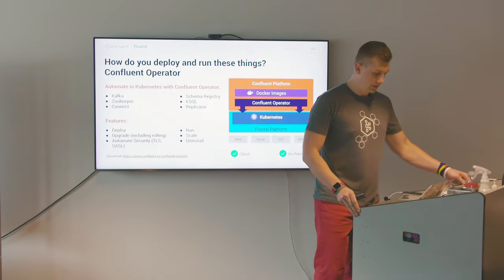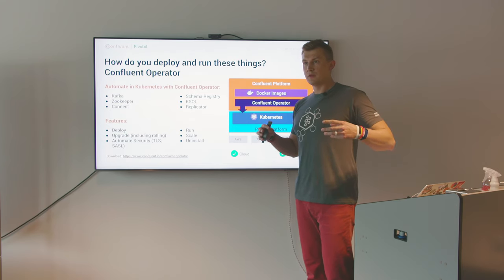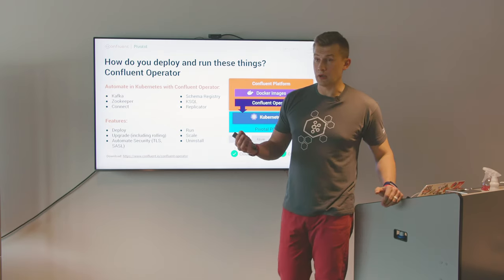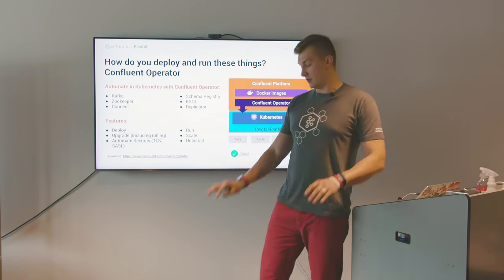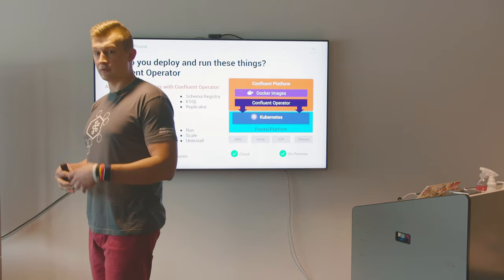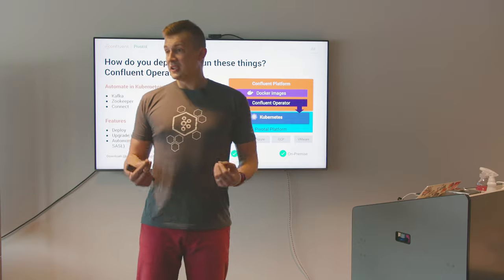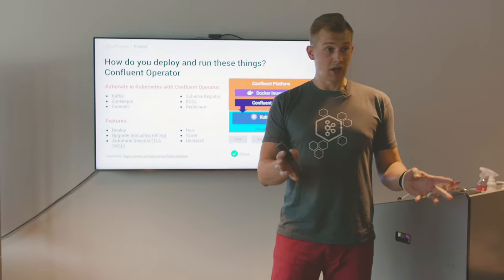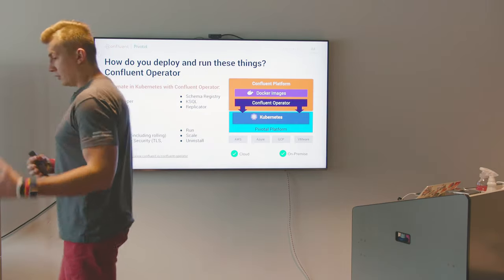We finally released the Confluent Operator, which was a very interesting journey. We also run a managed service in the cloud called Confluent Cloud — managed Kafka, managed Schema Registry, managed ksqlDB, and managed connectors. When we started this, Kubernetes was very young. We had to come up with automations, which is where the concept of custom controllers came in — extending Kubernetes APIs, defining domain-specific things around Kafka rather than dealing with small Lego blocks.